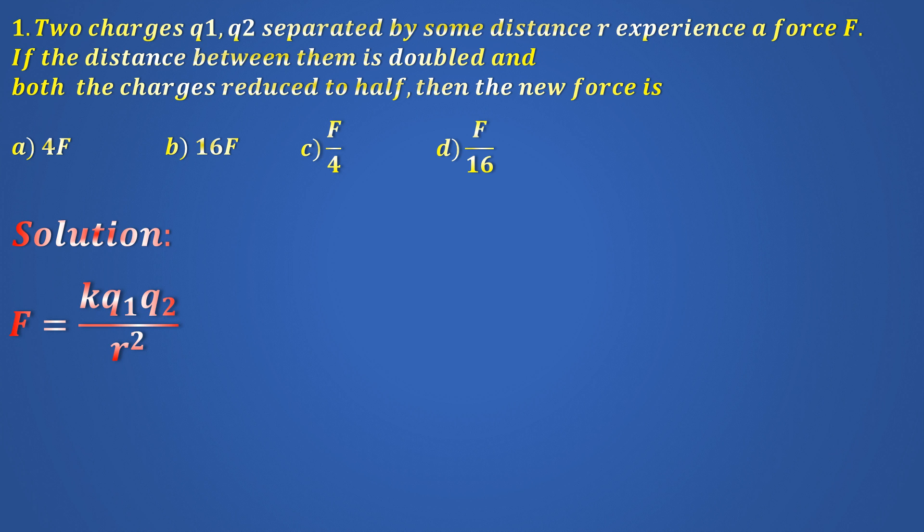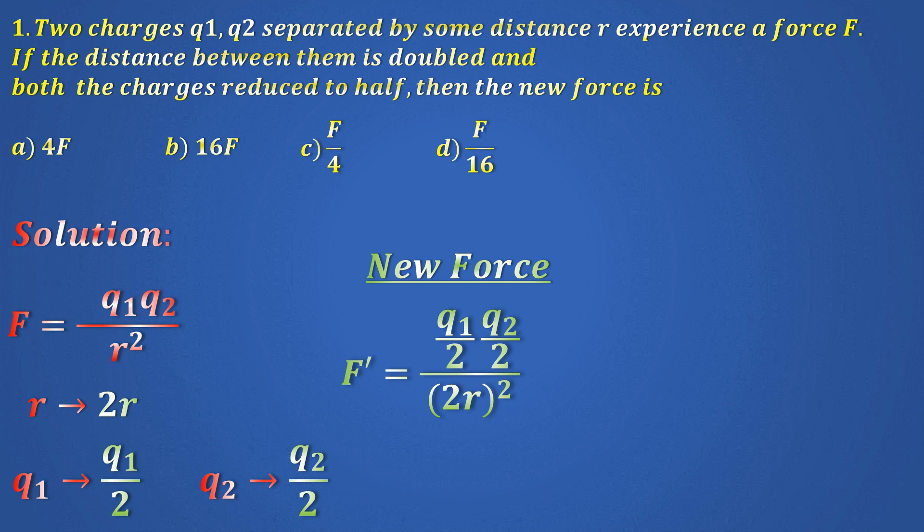the Coulomb's constant can be completely ignored. So we will write F equals Q1 Q2 by R square. Now since the distance is doubled, R becomes 2R and the charges are halved, meaning Q1 becomes Q1 by 2 and Q2 becomes Q2 by 2. Thus, new force F' would be Q1 by 2, Q2 by 2, divided by 2R the whole squared, giving you Q1 Q2 divided by 16R squared, which is F divided by 16.